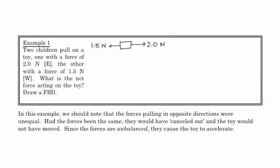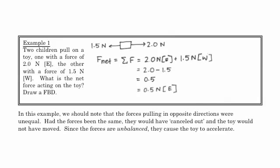And we want to know the net force. So here, F net is equal to the sum of the forces, which is 2 Newtons East plus 1.5 Newtons West. But in our sign convention, West is the negative direction. So we'd say 2.0 minus 1.5. And we end up with 0.5. So F net is 0.5 Newtons East.